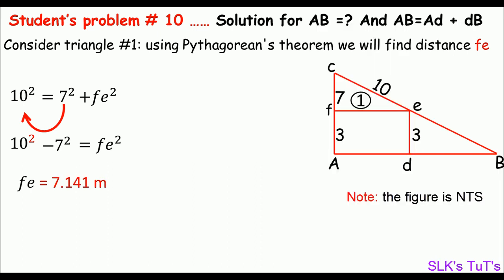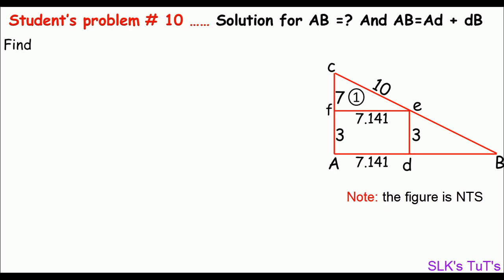If the base of triangle 1 is FE, and FE equals AD, then we can calculate AB if we find DB from the same figure. So let's do calculation for DB.